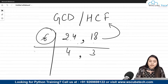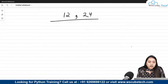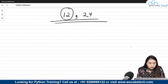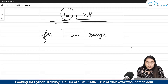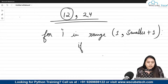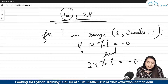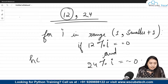Now we need to find the highest common factor using Python. We first check which number is smaller. Suppose we have 24 and 12 — 12 is smaller. We iterate using: for i in range(1, smaller + 1). We check if x divided by i gives remainder 0 AND y divided by i gives remainder 0.